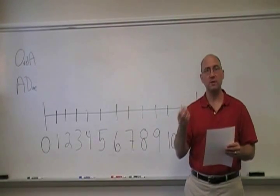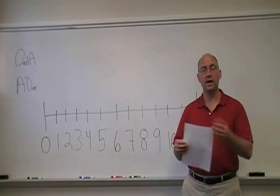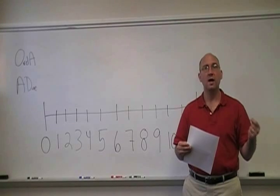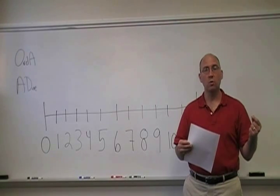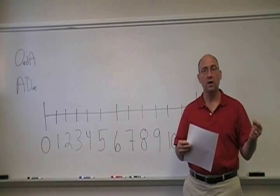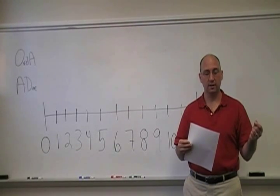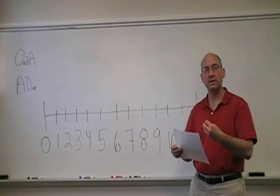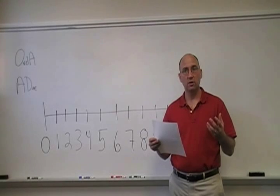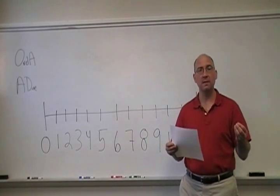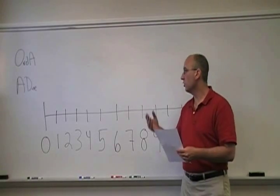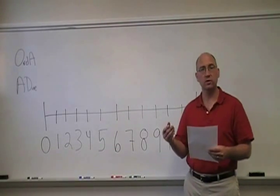This problem involves basically understanding the cash flow patterns associated with annuities and annuities due, as well as understanding which one, based on those patterns, has a higher value, and which one Apollo should take. He has a choice — in both cases it's Z dollars — so he's going to be getting monthly payments, and every payment is going to be Z over 12. He has a choice of an ordinary annuity or an annuity due.